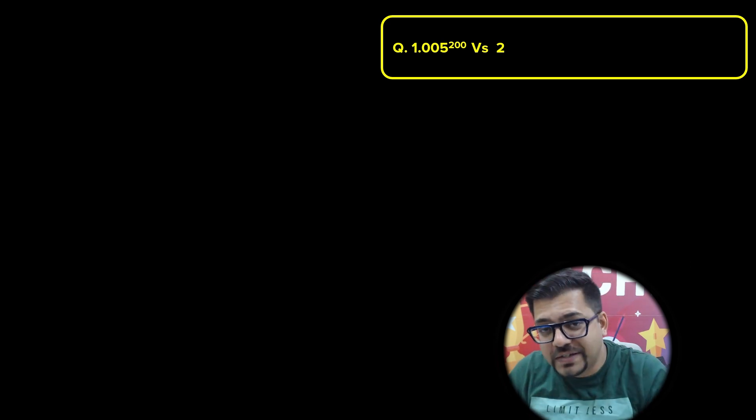Here we have got another problem which is a very simple looking problem but a very tricky one, and indeed a very beautiful question. The question says we have 1.005 raised to power 200, and we have to compare that with 2 — which one is greater, which one is smaller. 2 is a very simple number, but here it's a decimal, so how are we going to do that?